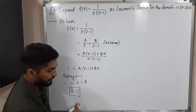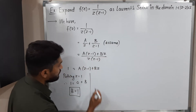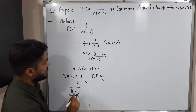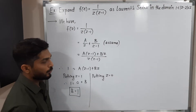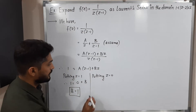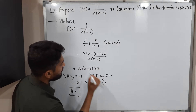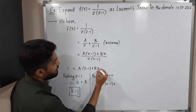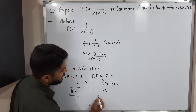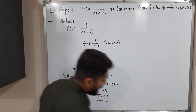Now we find A. We substitute z=0. The B·z term becomes zero. On the left we have 1, and on the right we have A(0-1) = -A. So 1 = -A, which means A = -1. We now have both constants.